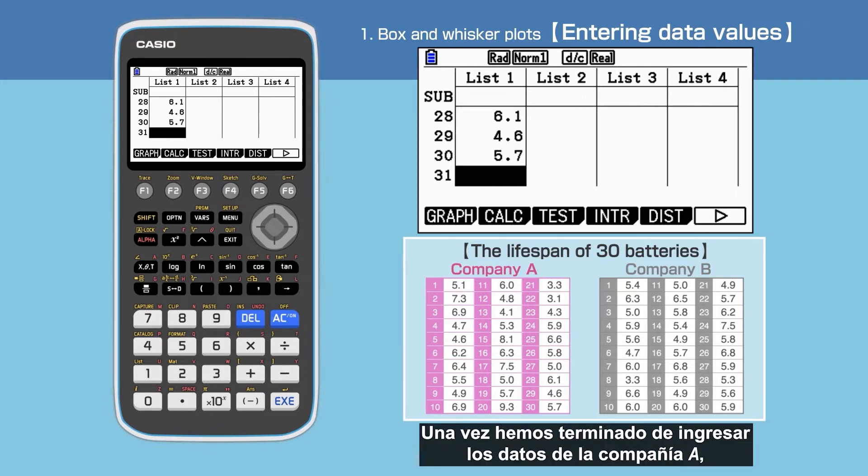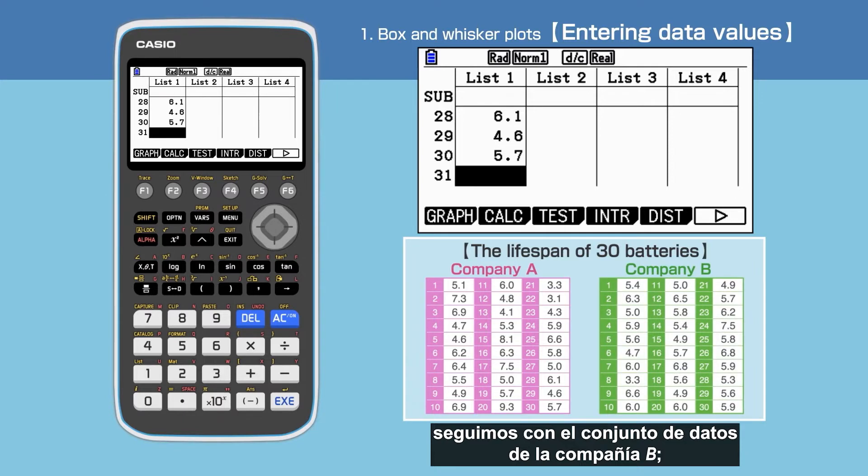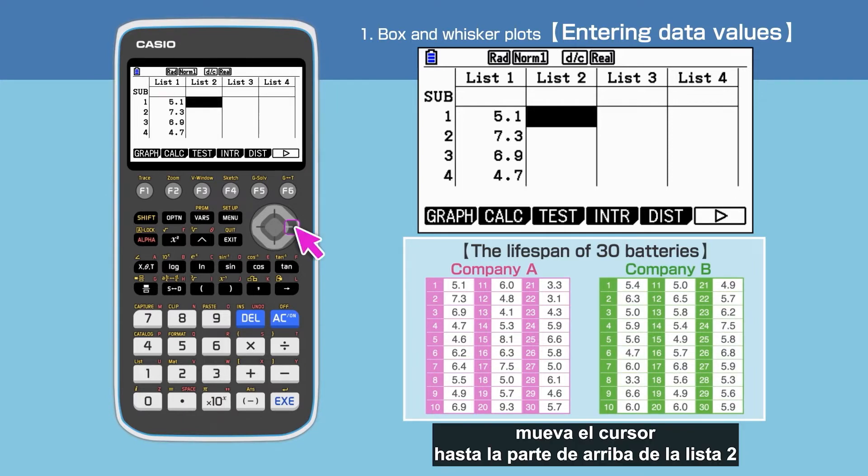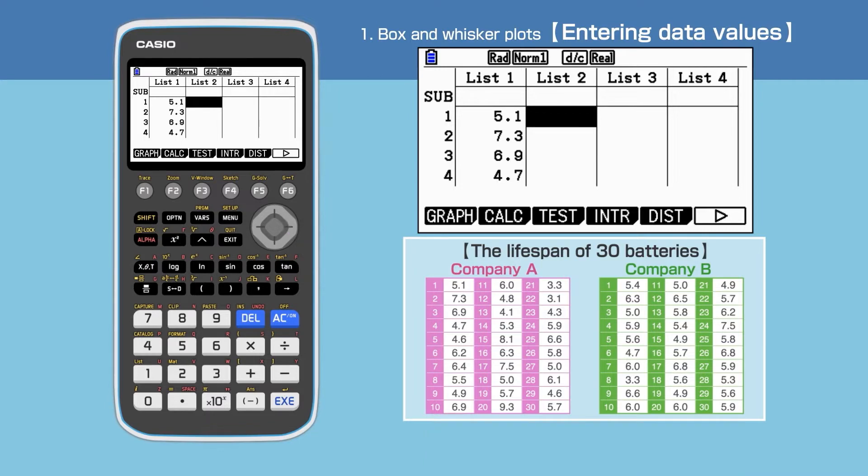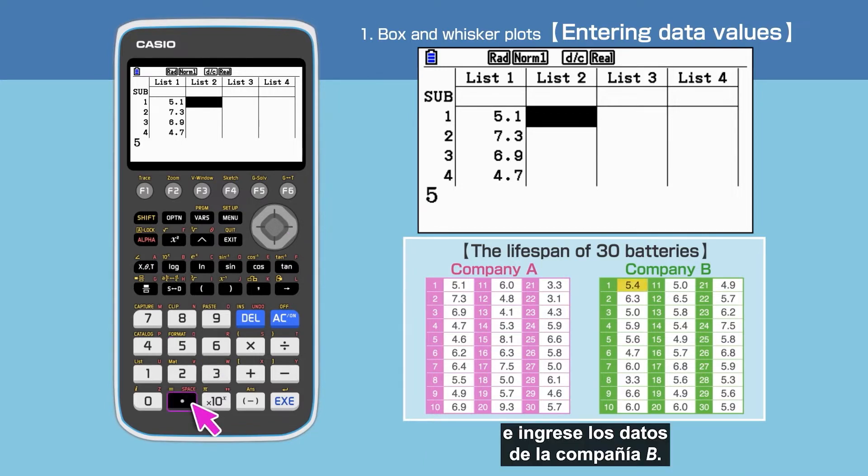Once we have finished with company A, we next need to input the dataset for company B. Move the cursor to the top of list 2. Input the data for company B.